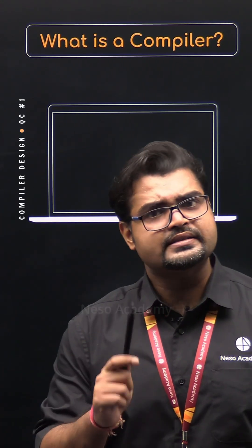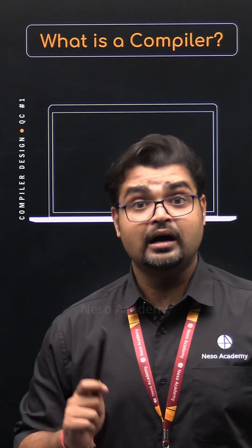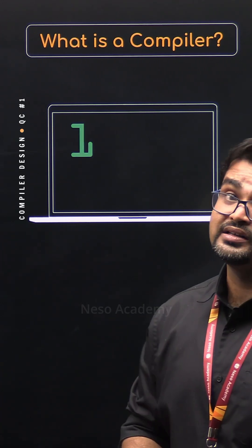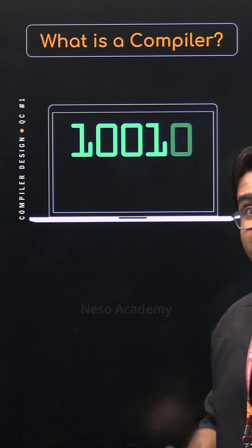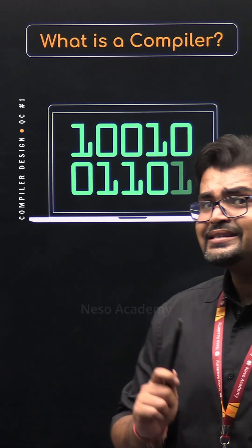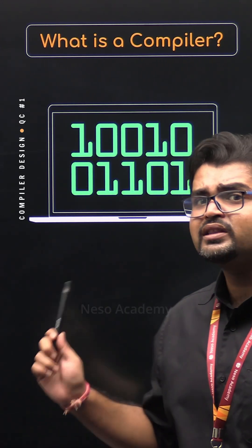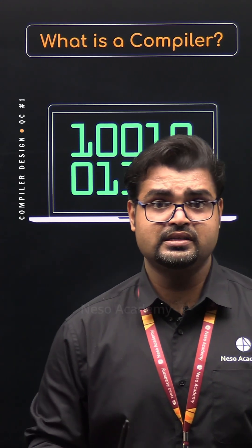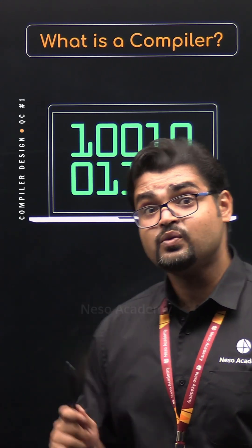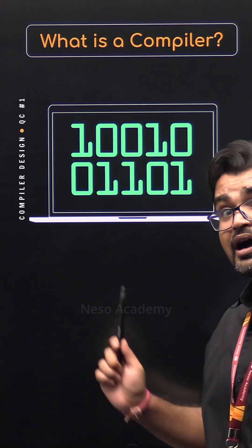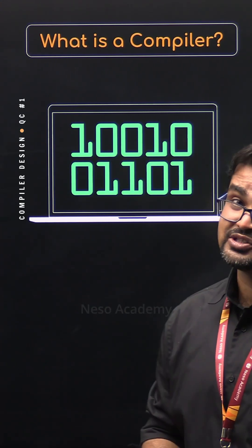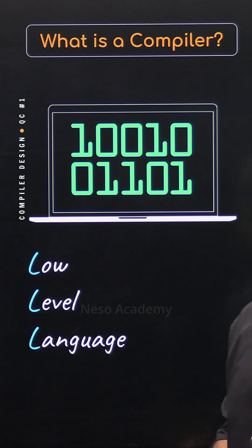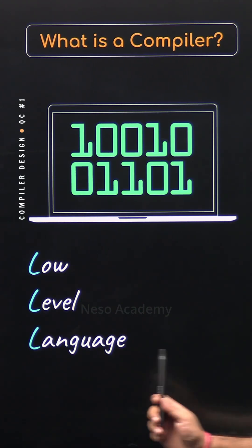Now, there is a catch. Computers, on the other hand, only understand 1s and 0s, and this is why we call the computers the low-level machines. The language that the computer understands is known as low-level language, or the machine code.